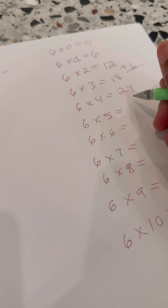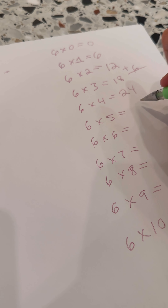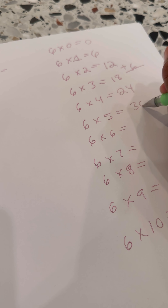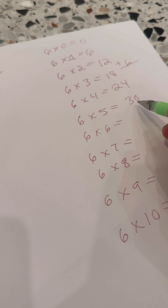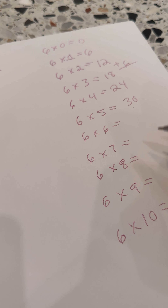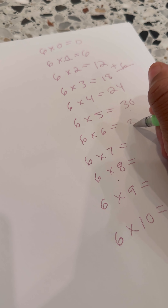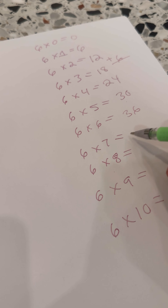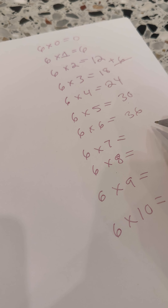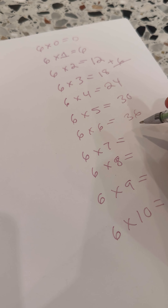What's 24 plus 6? 30. What's 30 plus 6 more? 36, Mom. And what's 36 plus 6 more? Like, he was so sassy with me.